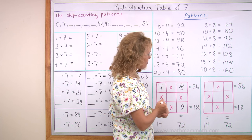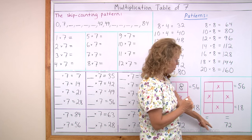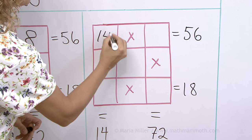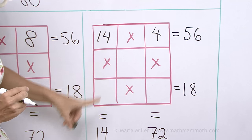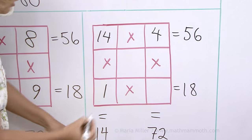So I'm going to use that in my puzzle. Put fourteen here because there's fourteen there too. Fourteen times four makes fifty-six. Now it's pretty easy. Fourteen times one, of course, makes fourteen.